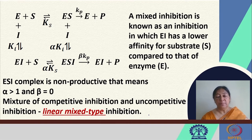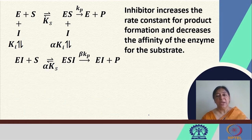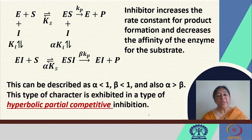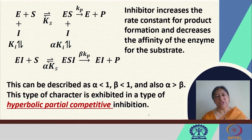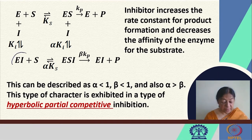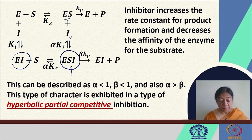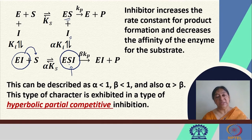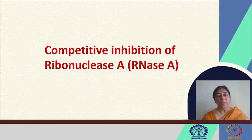The typical Lineweaver-Burk plot was shown in the previous lecture. If the inhibitor increases the rate constant for product formation and decreases substrate affinity, we can have a different type of character in what is called hyperbolic partial competitive inhibition. There are various possibilities: the inhibitor could act directly on the enzyme forming an enzyme-inhibitor complex, bind to the enzyme-substrate complex to form the ternary complex, or the enzyme-inhibitor could bind substrate to form the ternary complex, which may or may not result in product formation — giving us this mixed type of inhibition.